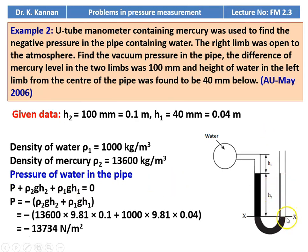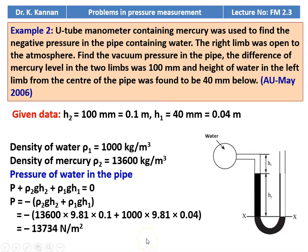The pressure is negative, so the mercury level is entirely on the left side with reference to datum XX. In the right limb above XX there is no fluid. Pressure equation on the left limb: P plus ρgH₂ plus ρgH₁ equals 0. Rearranging: P equals minus of (ρ₂gH₂ plus ρ₁gH₁), which gives minus of (13,600 × 9.81 × 0.1 plus 1000 × 9.81 × 0.04) equals minus 13,734 newtons per meter square. This question was from the May 2006 question paper.